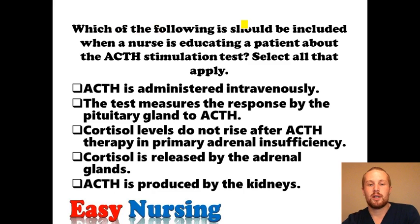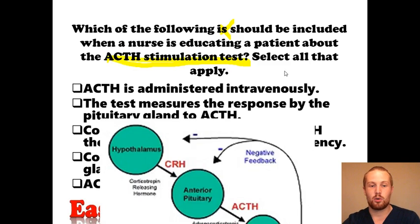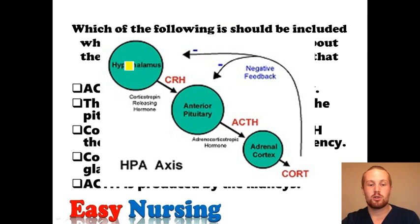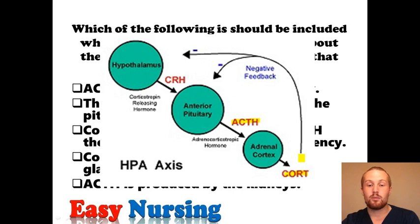Which of the following should be included when a nurse is educating a patient about the ACTH stimulation test? The ACTH test is a test to determine what kind of Addison's or adrenal insufficiency you have. Your pituitary gland should be producing ACTH. This hormone, produced by your gland in your brain, then tells your adrenal cortex to produce cortisol as well as aldosterone and androgens. Addison's is going to be low hormones coming off the adrenal cortex.